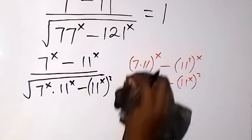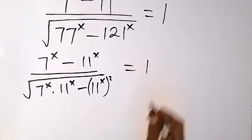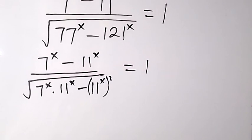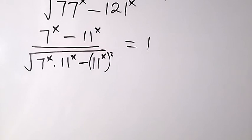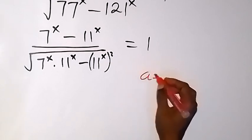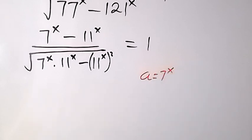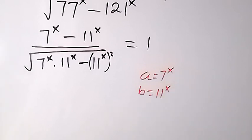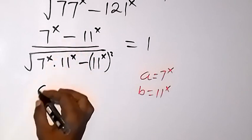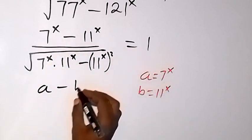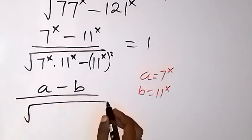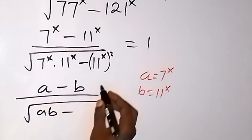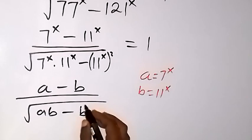The right hand side is said to be equal to 1. We can use a letter to represent 7 raised to power x and 11 raised to power x. Let a equal 7 raised to power x and b equal 11 raised to power x. Then we have a minus b divided by root of ab minus b squared, which is equal to 1.